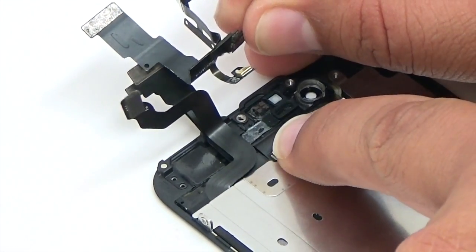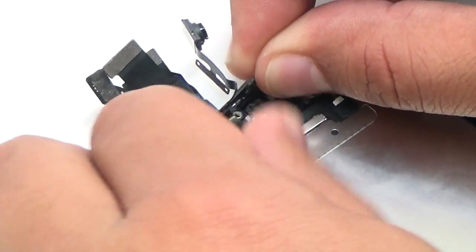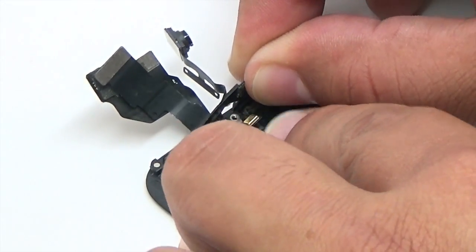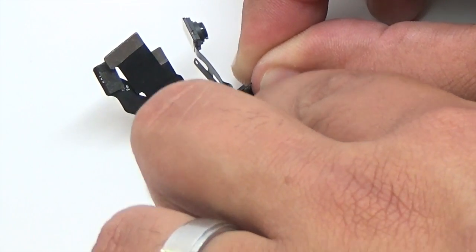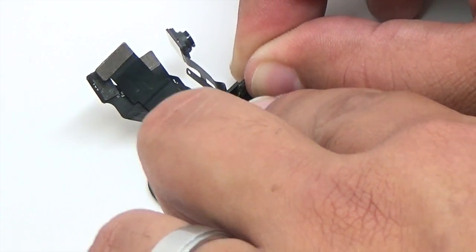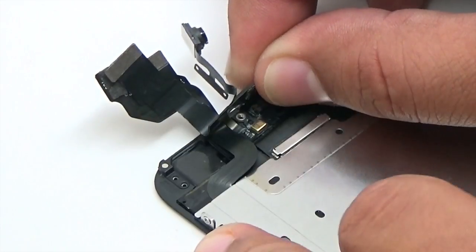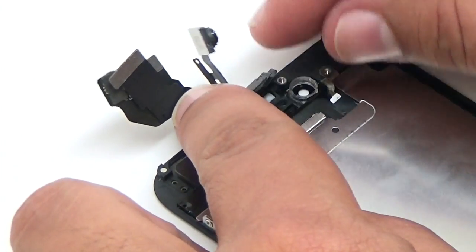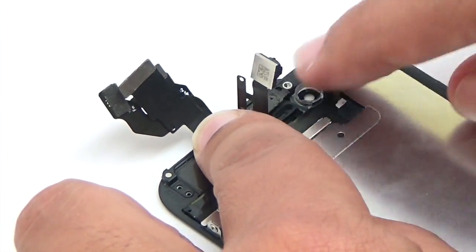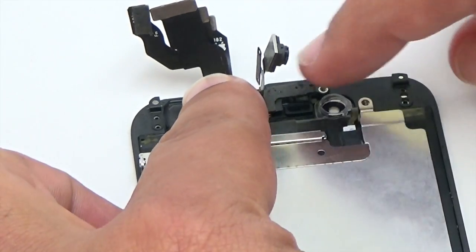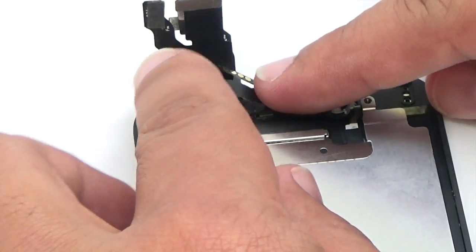For reassembly, place the microphone portion of the front-facing camera and sensor cable to the display assembly. Align the proximity and ambient light sensors to the display assembly.